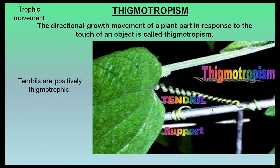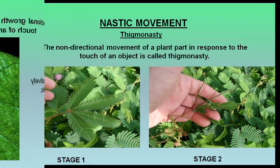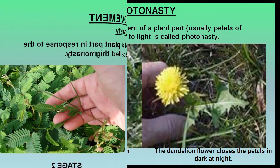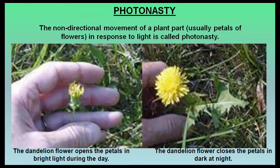Thigmotropism is the directional growth movement of a plant part in response to the touch of an object; tendrils are positively thigmotropic. Thigmonasty is the non-directional movement of a plant part in response to the touch of an object. Photonasty is the non-directional movement of a plant part — usually petals or flowers — in response to light.